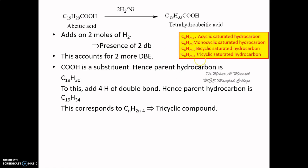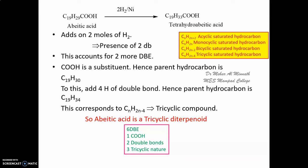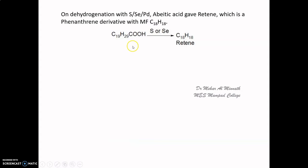Abietic acid is therefore a tricyclic diterpenoid. We have now accounted for all six double bond equivalences: one for the COOH group, two for the two double bonds, and three for the three rings. So abietic acid has three rings, two double bonds, and one COOH group.